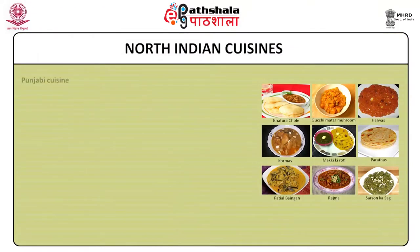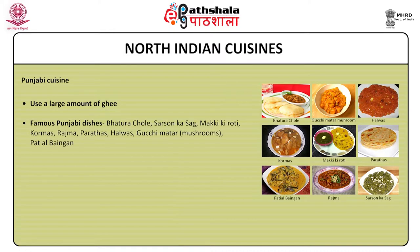North Indian cuisine: Punjabi cuisine. The dishes are rich and have a distinctive flavour. Punjabis use a large amount of ghee in their dishes. Some famous Punjabi dishes include vatura chole, sarson ki saag, makki ki roti, kurmas, rajma, parathas, halvas, gukki matta etc.